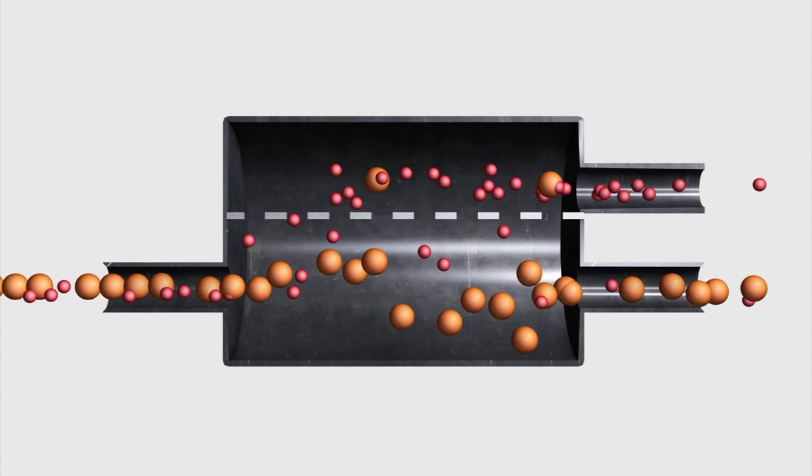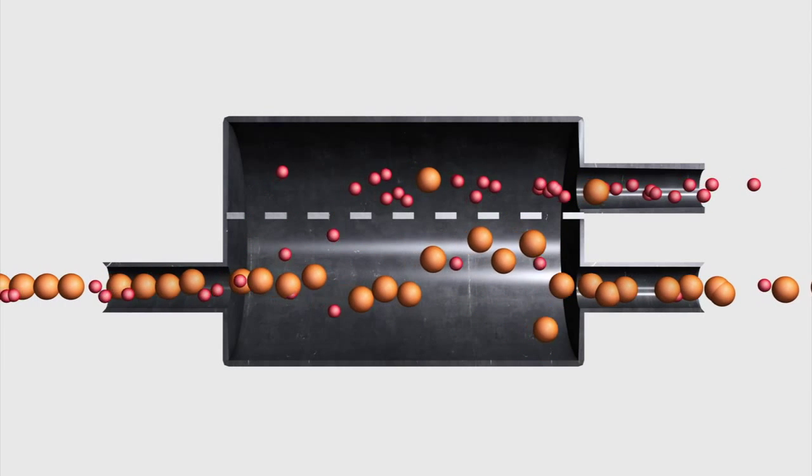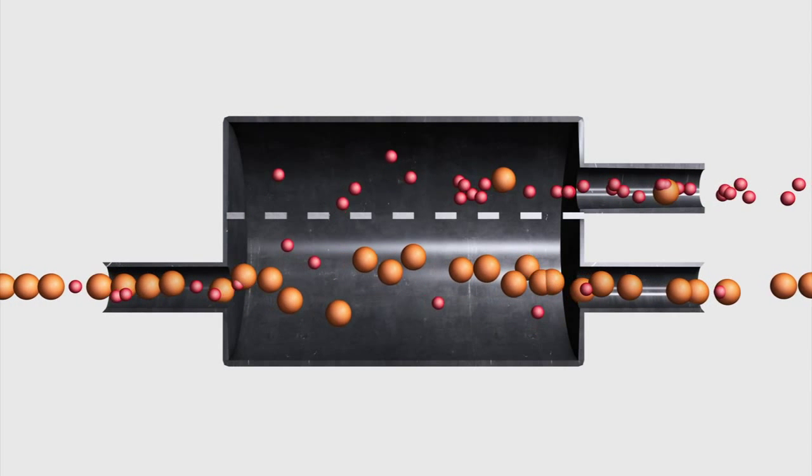As Uranium-235 is smaller than Uranium-238, it passes through the membrane faster, making Uranium-235 enrichment possible.